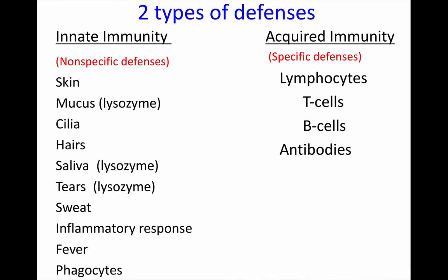Before we get into the actual three lines of defense, it's important to remember that there are two main categories of defenses. You have innate immunity, which includes nonspecific defenses, and then you have acquired immunity, which involves specific defenses.